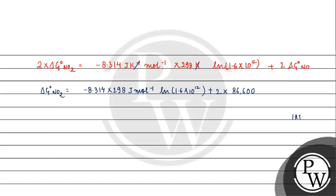1 kJ equals 1000 Joules. So 86.6 kJ per mol equals 86.6 × 10³ Joule per mol, which is 86,600 Joule per mol.